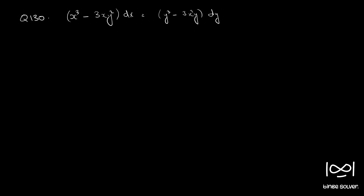Question number 130. The equation is x³ minus 3xy² dx equals y³ minus 3x²y. We extract dy/dx first. On rearranging, dy/dx becomes x³ minus 3xy² by y³ minus 3x²y. If you divide both numerator and denominator by x³, you can see that dy/dx is a function of y/x, which means it is a homogeneous equation.